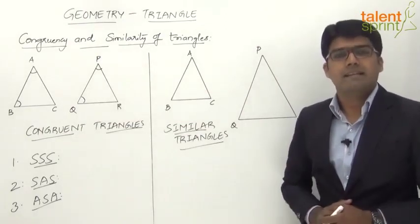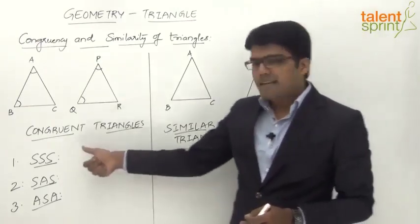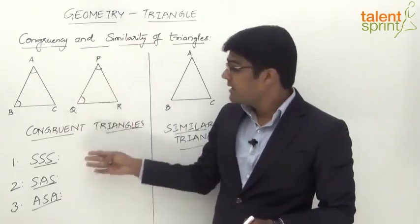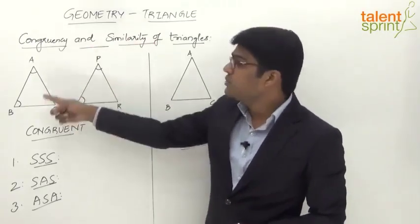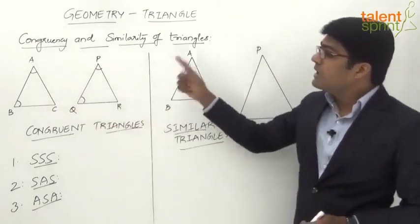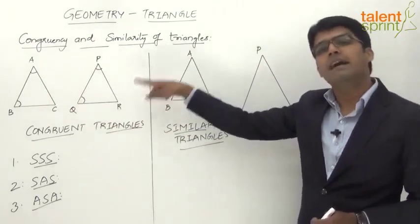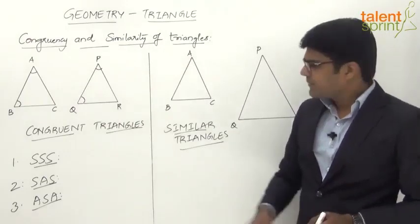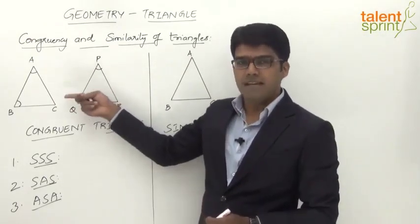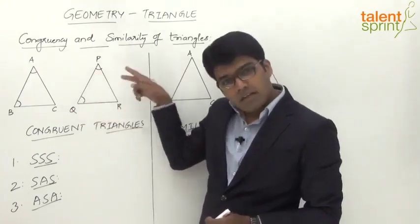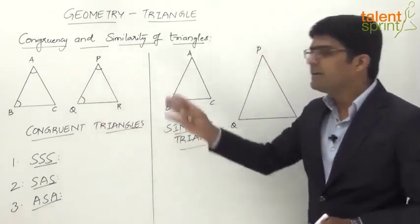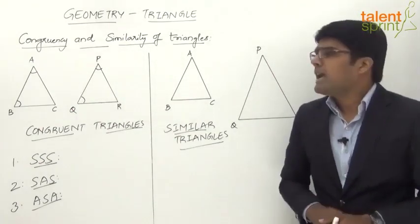To summarize: SSS means all three sides of the first triangle equal the three corresponding sides of the second. SAS means any two sides and the included angle equal the corresponding two sides and included angle. ASA means any two angles and one side equal the corresponding two angles and corresponding side. In all three cases, the two triangles are congruent.